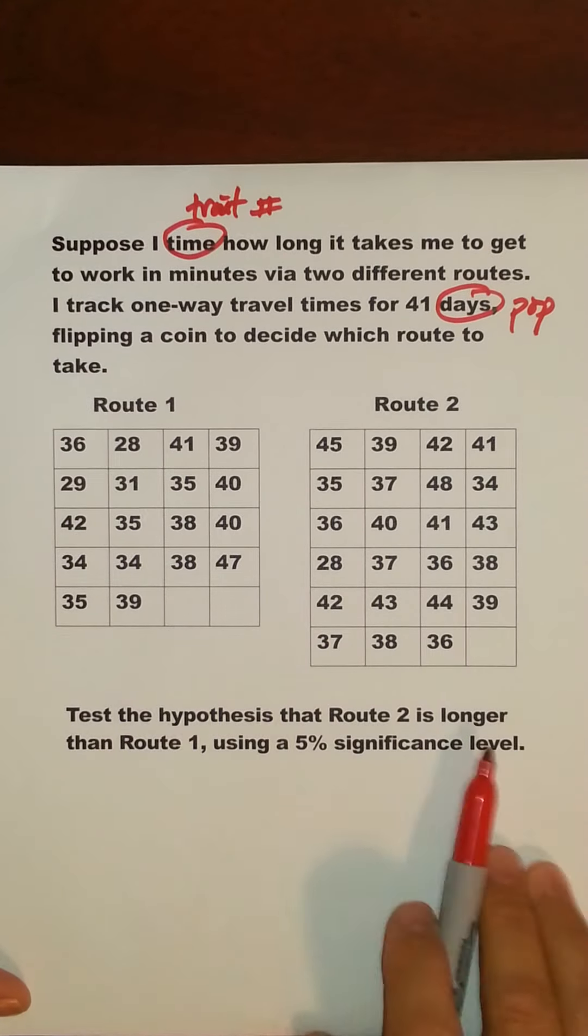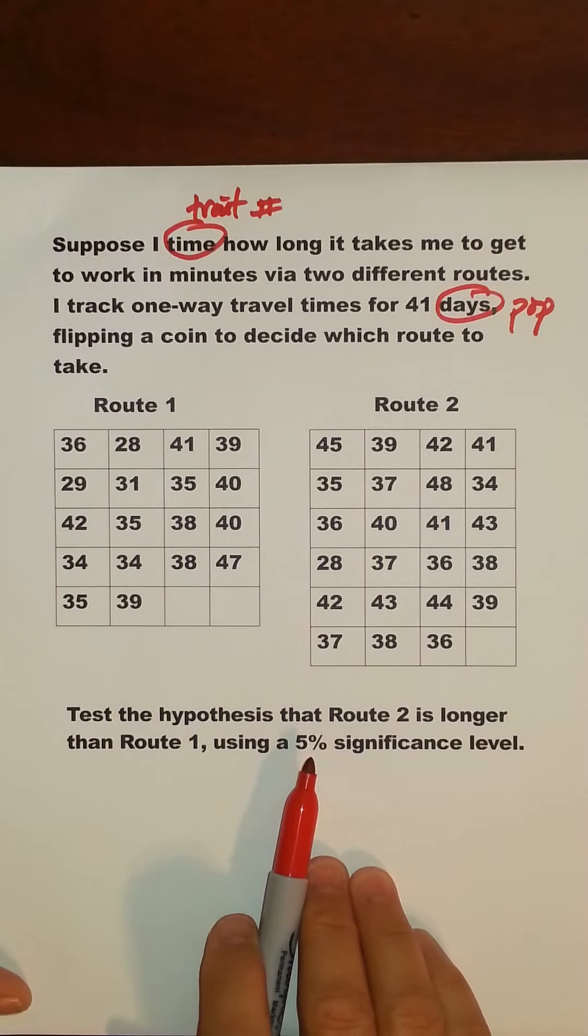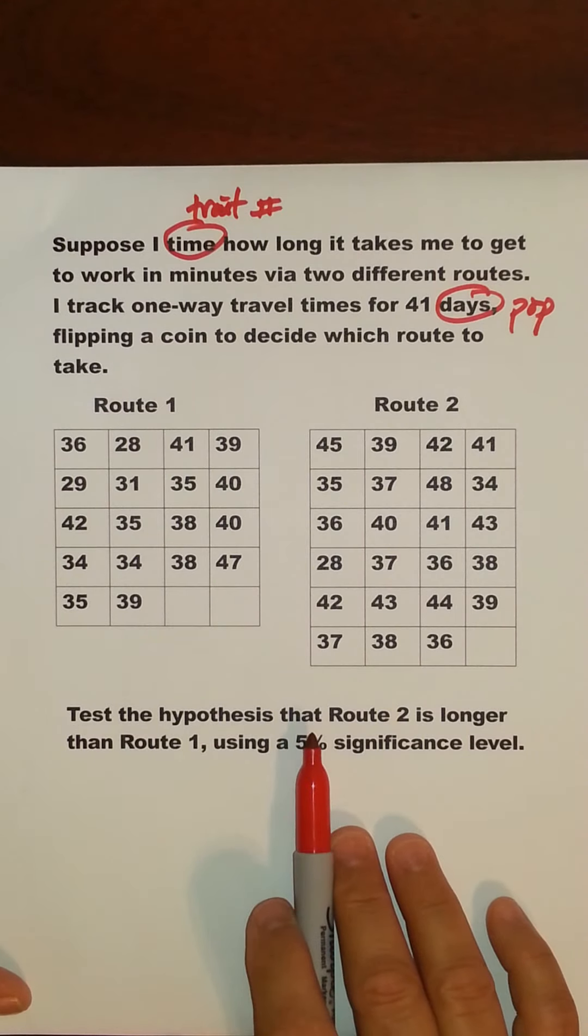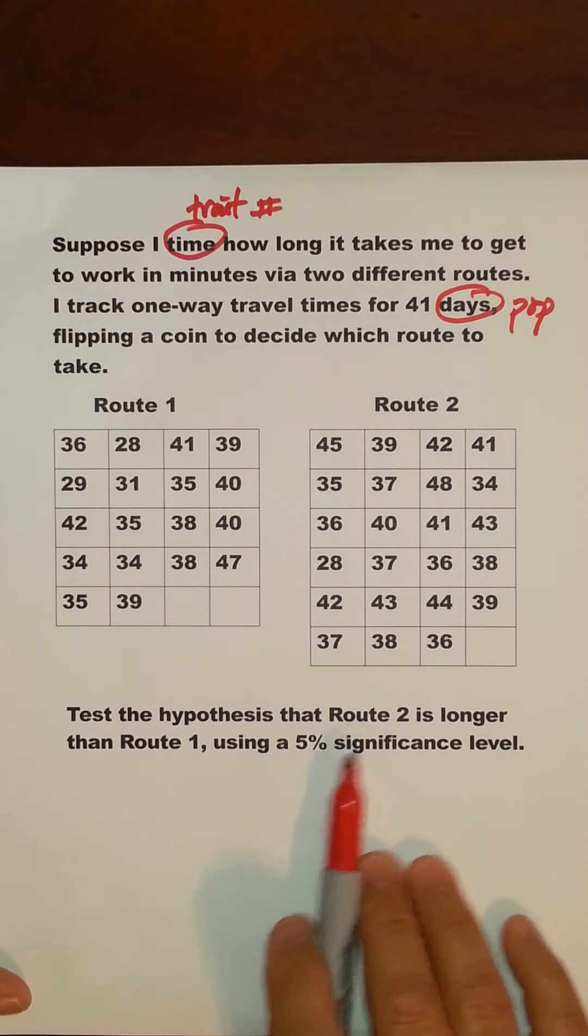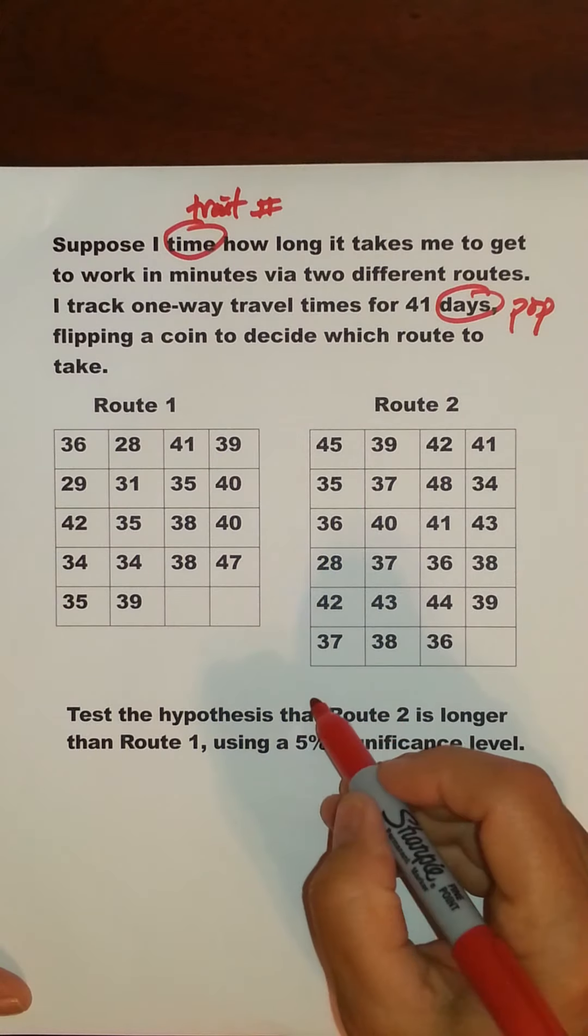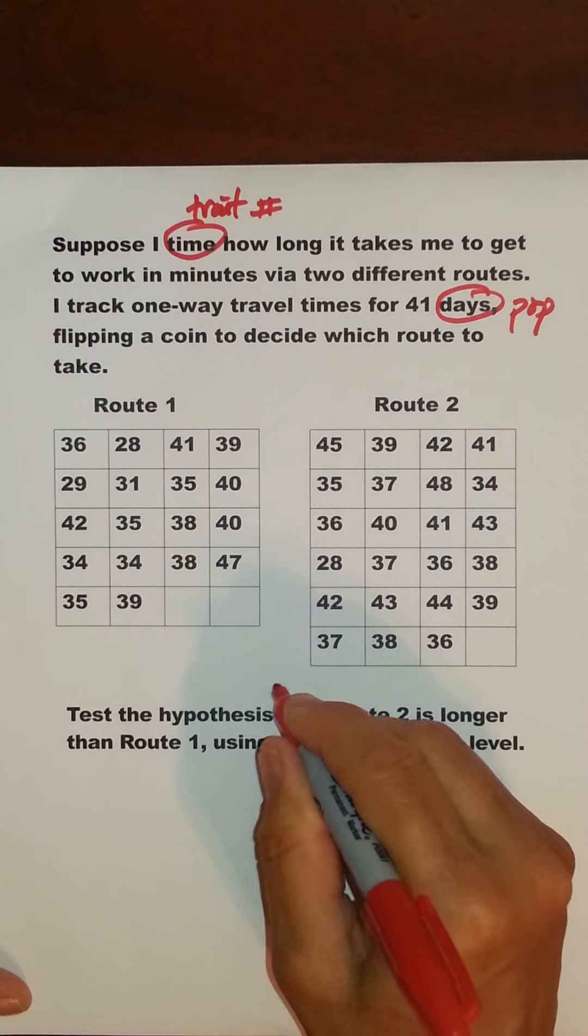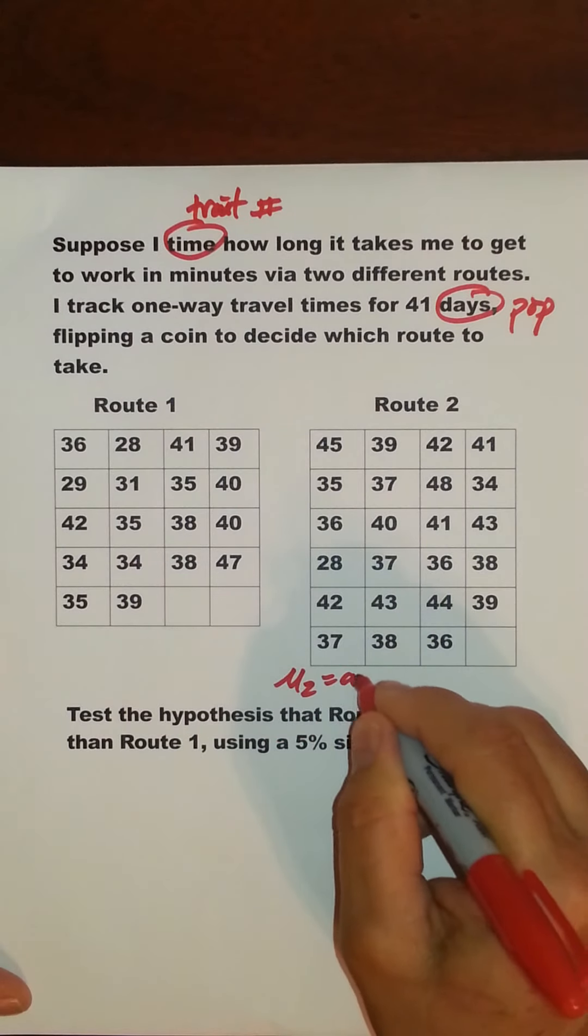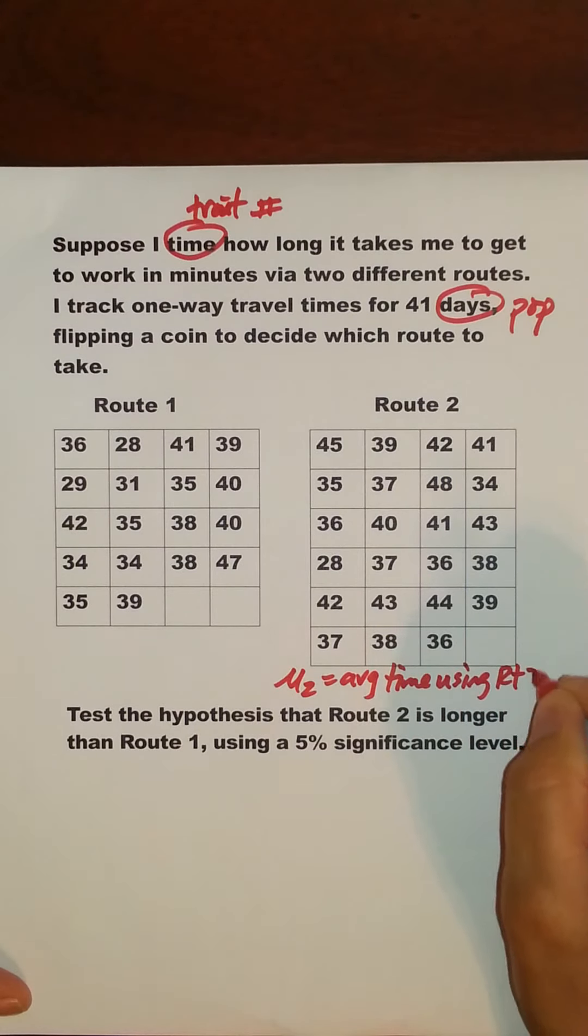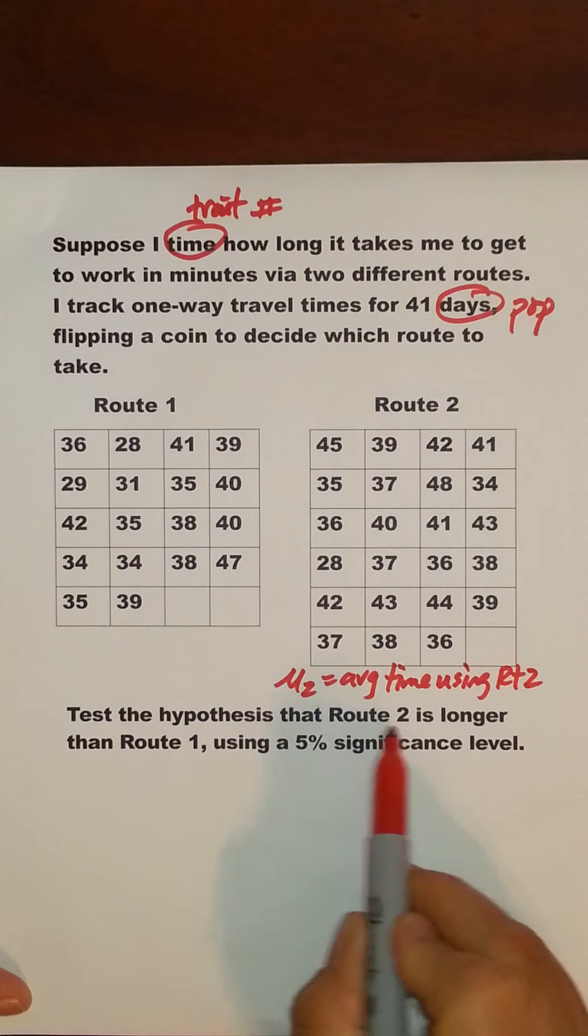So let's go ahead and just translate this. We're assuming here that if they had said every word, tests the hypothesis that the time, the average time that it takes to get to work using Route 2 is longer than the average time that it takes to go using Route 1. In that case, what we're saying is that Mu2 is the average time to go to work using Route 2. So Route 2 is longer.